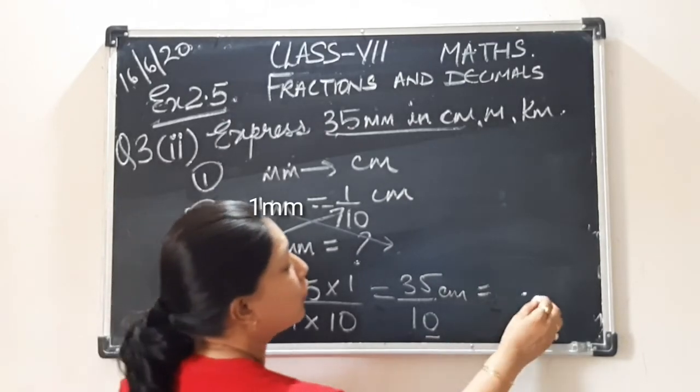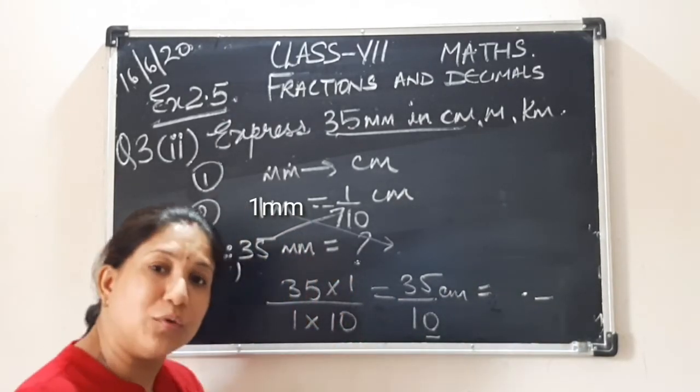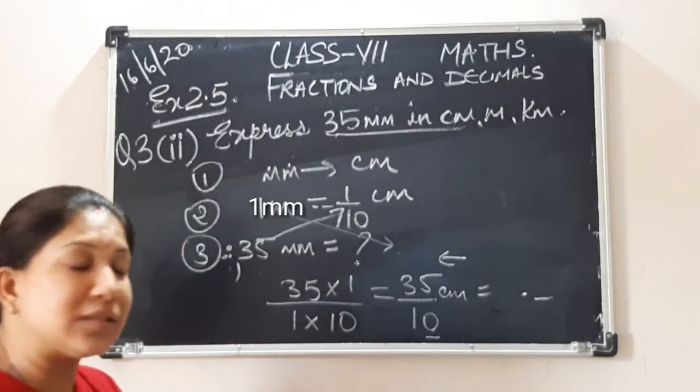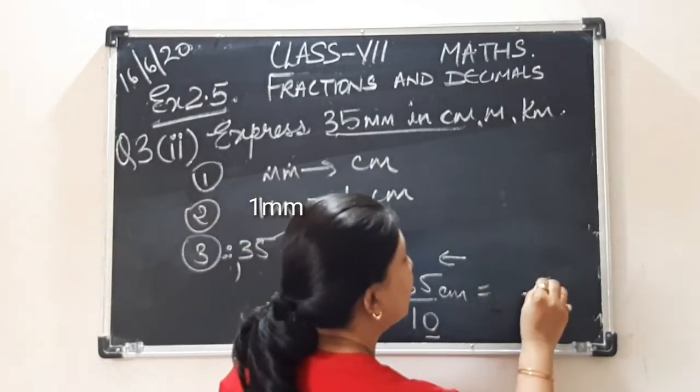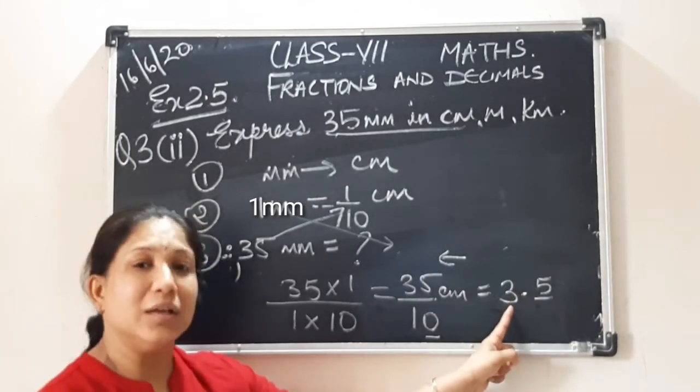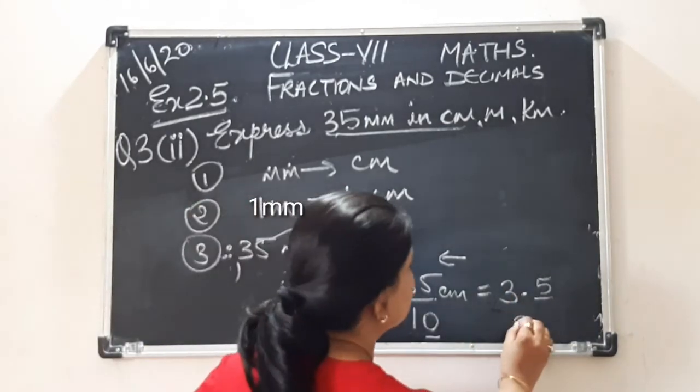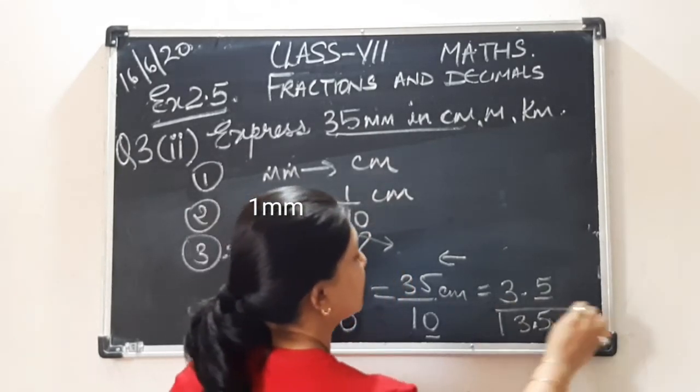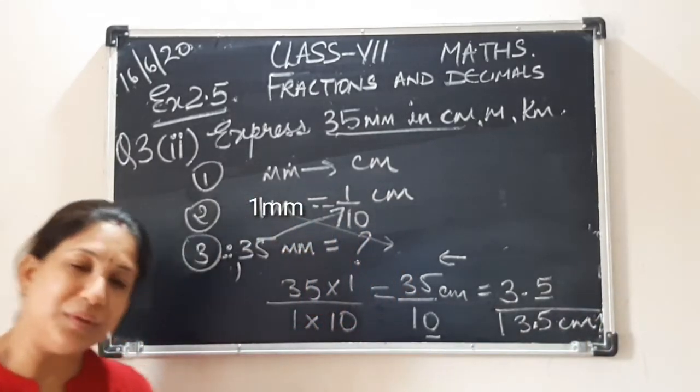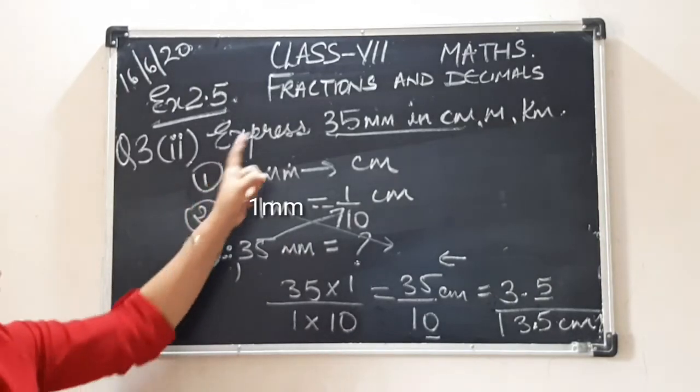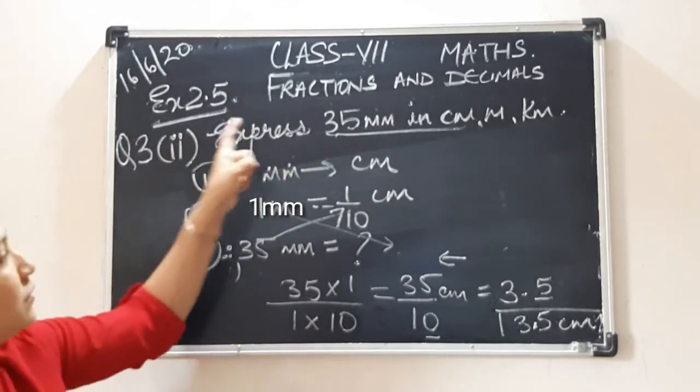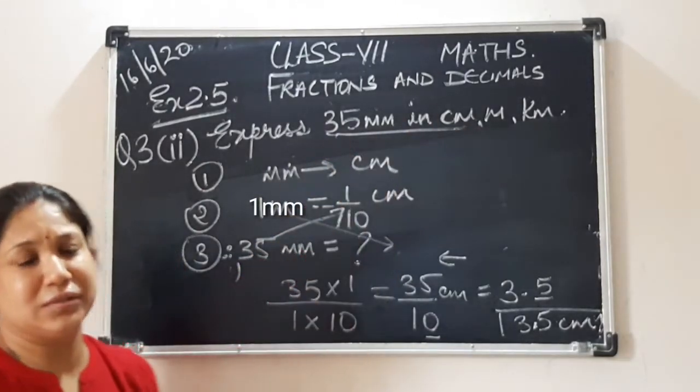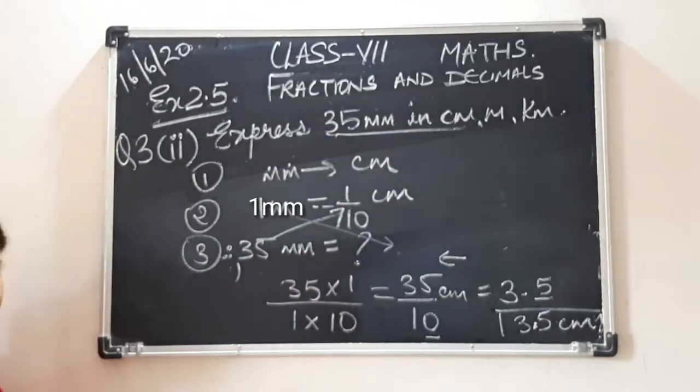How many zeros are there? Only one zero. So we will put only one dash. Now start from the right hand side. First write down 5. Only one dash, so you will write down 3 here. So our answer is 3.5 centimeters. Is it clear? Please copy the solution. And now we will learn how to convert 35 millimeters into meters. Pause the video and copy the solution.